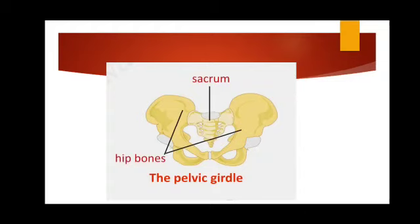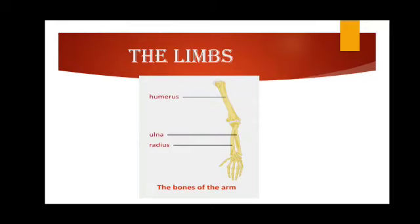Now we will move on to the limbs — first, the bones of the arm. Each arm includes the upper arm, the lower arm, the wrist, and hand. The upper arm contains the humerus, and the lower arm contains the ulna and radius. As you can see in the diagram, there is a long bone called the humerus in the upper arm, and the lower arm contains the ulna and the radius.